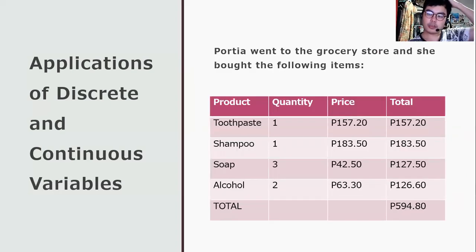Second example. Portia went to the grocery store and she bought the following items. She bought one toothpaste worth 157.20 pesos, one shampoo worth 183.50 pesos, three soaps worth 127.50 pesos where each soap costs 42.50 pesos, and two alcohol bottles worth 126.60 pesos, wherein each alcohol bottle costs 63.30 pesos. We're going to determine which among the quantity or price is discrete.